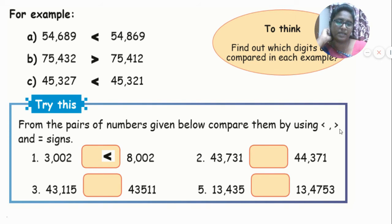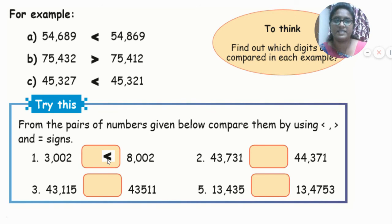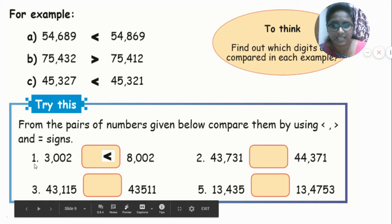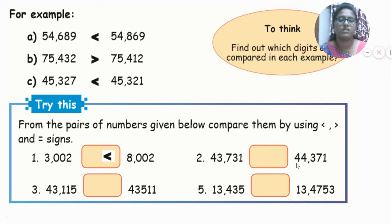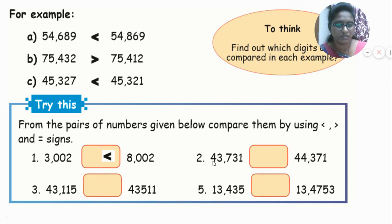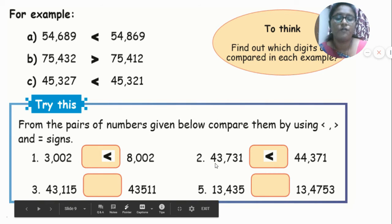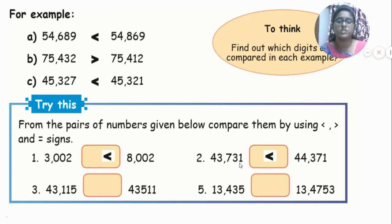From the pairs of numbers given, compare them using greater than, lesser than, or equal to signs. 3,002 is lesser than 8,002 — since 3 is smaller than 8 in the thousands place. 43,731 is lesser than 44,371 — comparing thousands place: 3 is less than 4.